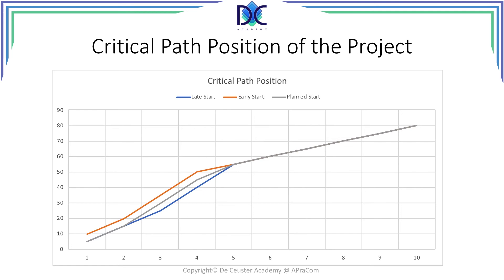From periods five through ten, everything is critical. We could already see that in the graph because there was only one activity — activity F — which was an activity on the critical path.